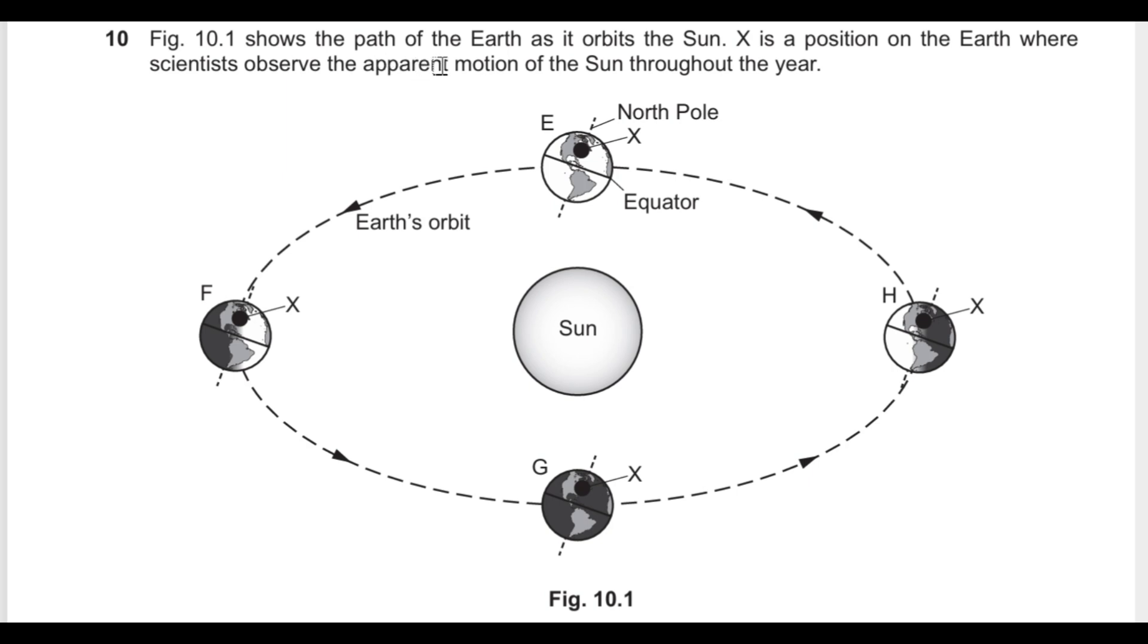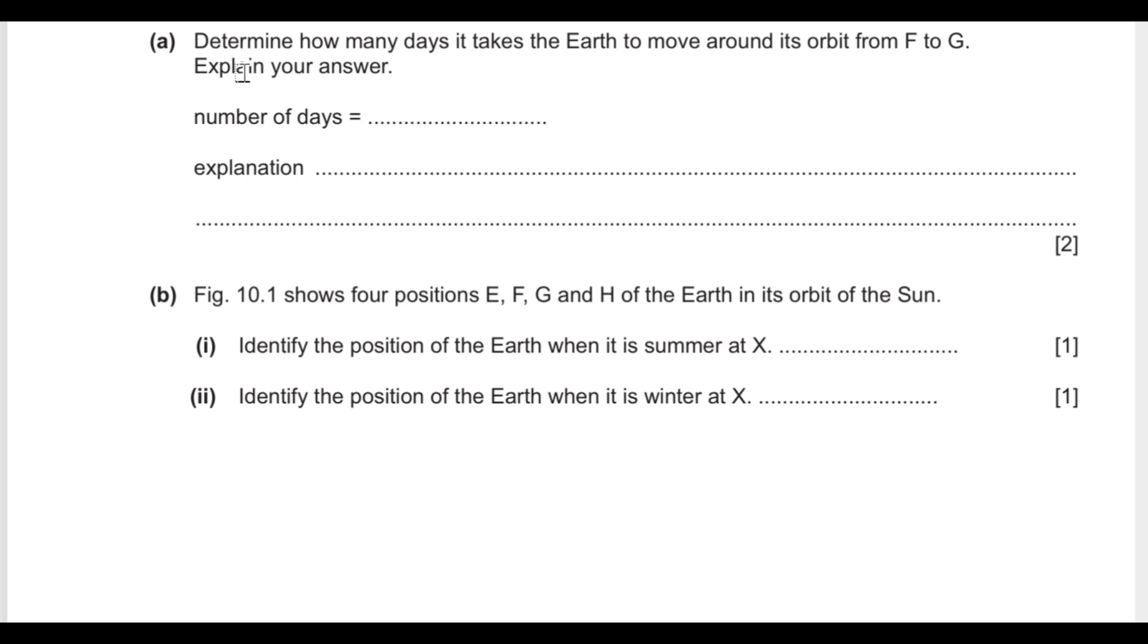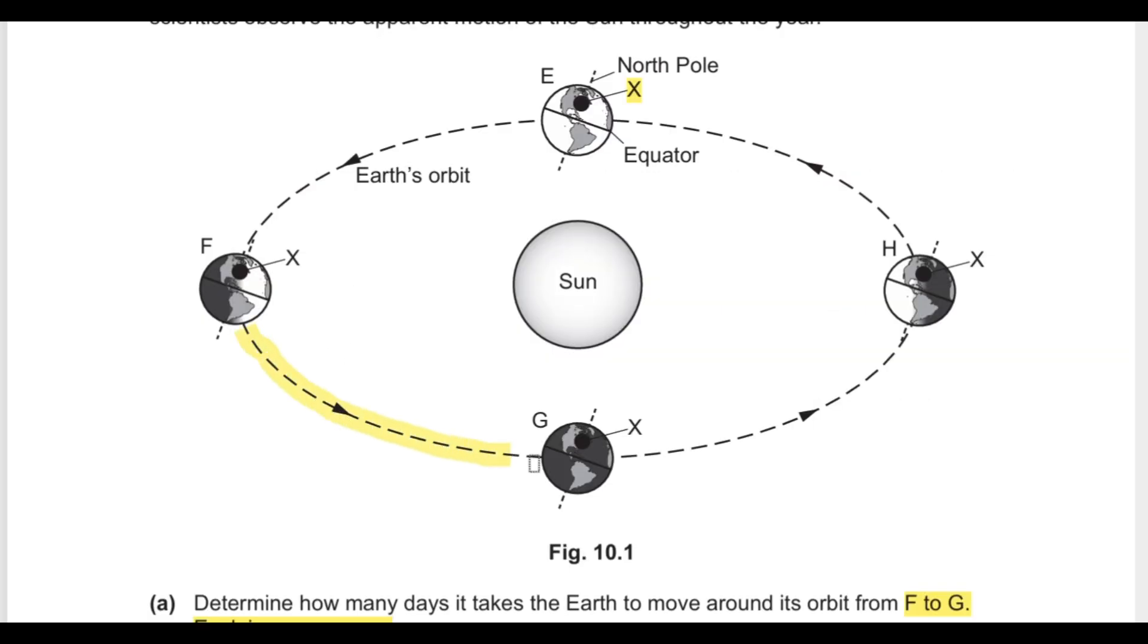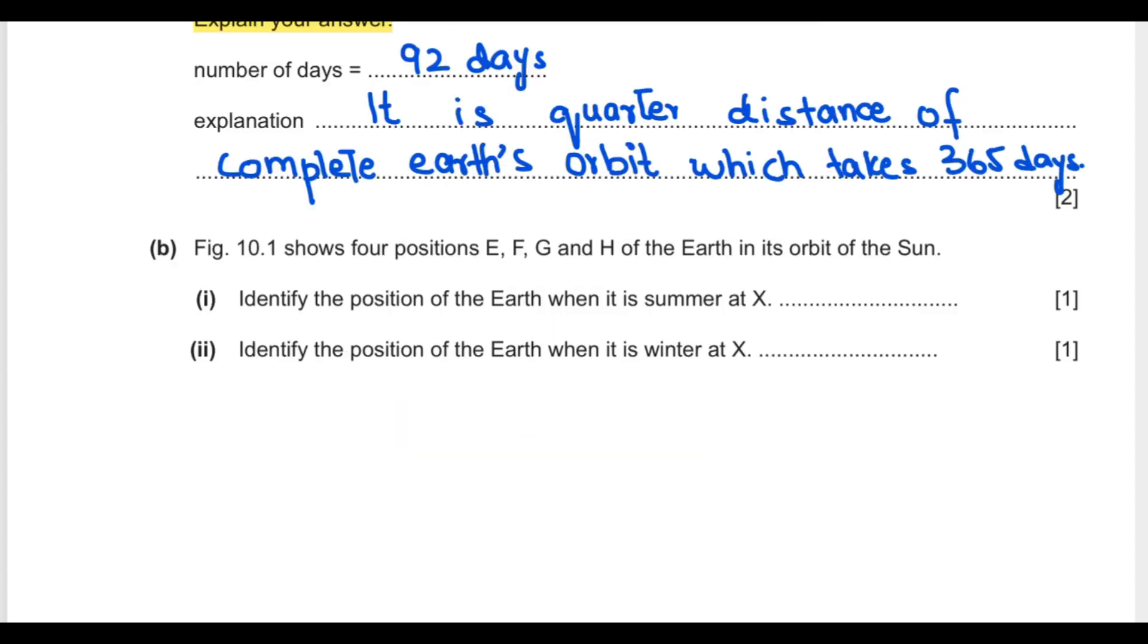Question 10 says figure 10.1 shows a part of Earth as it orbits the Sun. X is the position on Earth where scientists observe the apparent motion of the Sun throughout the year. Determine how many days it takes Earth to move around its orbit from F to G and explain your answer. Earth takes 365 days for complete orbit and this is one-fourth of Earth's orbit. So one-fourth times 365 equals approximately 92 days for Earth to go from F to G. 92 days because it is a quarter distance of complete Earth orbit which takes 365 days.